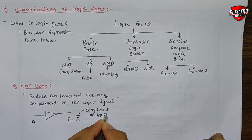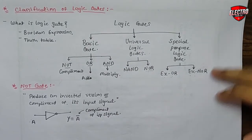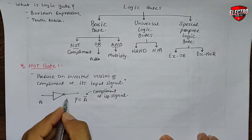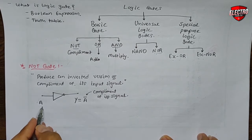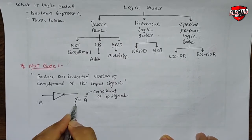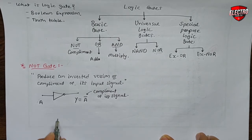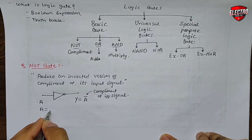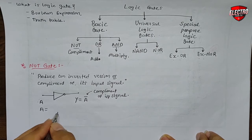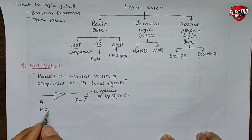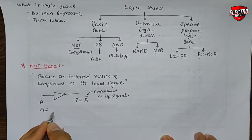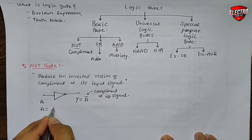The symbol of the NOT gate is a triangle with one bubble on its head. If the input signal is A, then the output signal Y is equal to the complement of A. We have only two distinct values in the binary number system, and all logic gates and all digital circuits work on the binary number system.